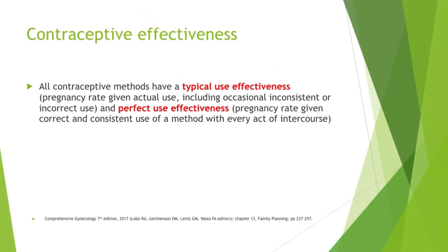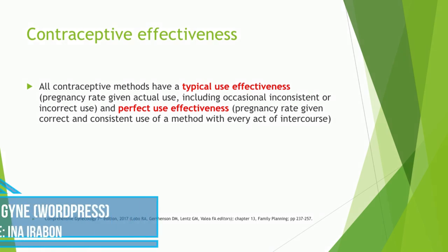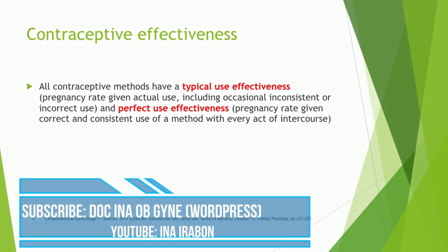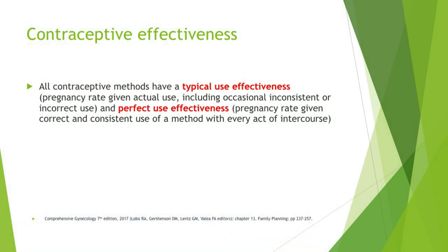When we talk about contraception, whether it be surgical, medical, natural, or artificial, we talk about the terms typical use effectiveness and perfect use effectiveness. Typical use effectiveness is the pregnancy rate given the actual use, including occasional, inconsistent, or incorrect use by the patient. Perfect use effectiveness, on the other hand, is the pregnancy rate given correct and consistent use of a method with every act of intercourse.